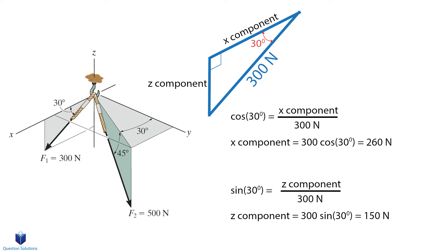We can also write another one for sine 30 degrees, which is equal to the z component over 300 newtons. Remember, sine is opposite over hypotenuse. Isolating for the z component and solving gives us 150 newtons. With these values, we can now write force F1 in Cartesian vector notation, which is 260i plus 0j negative 150k. Our k term is negative because the force is in the negative z axis. The pink dashed lines show the x and z components of force F1.